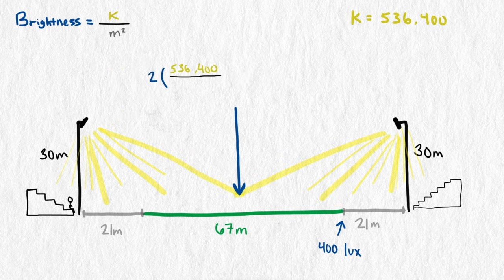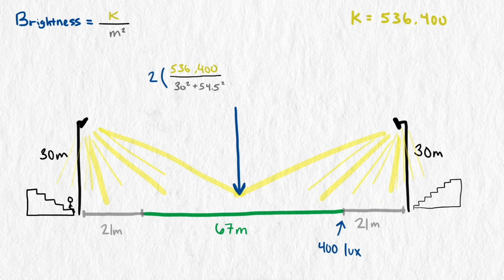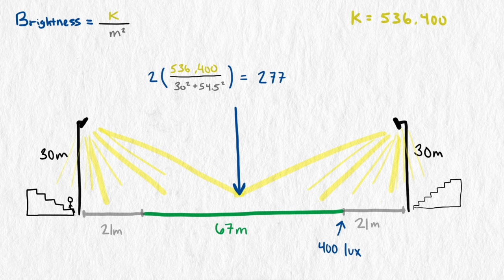And the middle of the field? About 140 lux from each light, so 277 in total. It's not quite the 400 that's preferred, but with the multiple other lights aiming towards the players, can easily get to the 400 minimum.